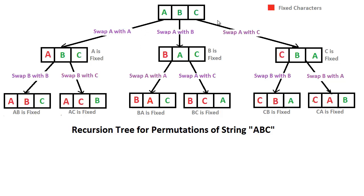If you have a four-character string then you have four factorial. The whole idea is that you start with the first character, then the second character, then the third character. The third character will implicitly always be there. Basically what we're going to do is swap the first and second characters — for four-length strings we'd handle a third swap too.